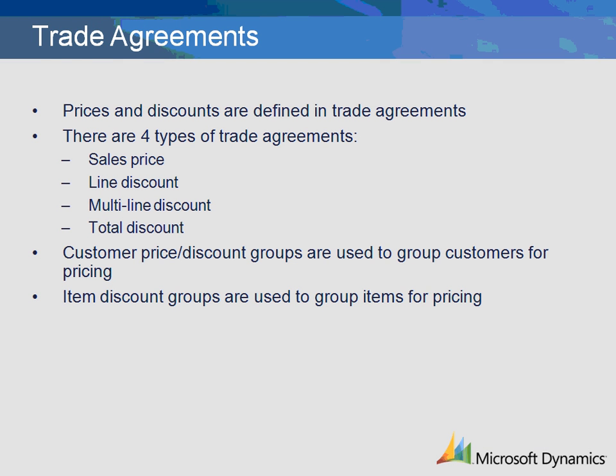Trade agreements are where prices and discounts are defined. There are four types of trade agreements: sales price, line discount, multi-line discount, and total discount. Trade agreements can be linked directly to a customer or to a customer price discount group. Customer price discount groups are user-defined categories linked to the customer to establish pricing. Item discount groups are used to group items for assessing line or multi-line discounts. Trade agreements can contain specific items, groups of items, or all items.